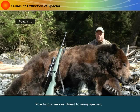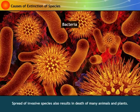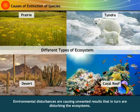Poaching is a serious threat to many species. Spread of invasive species also results in death of many animals and plants. Environmental disturbances are causing unwanted results that in turn are disturbing the ecosystems.